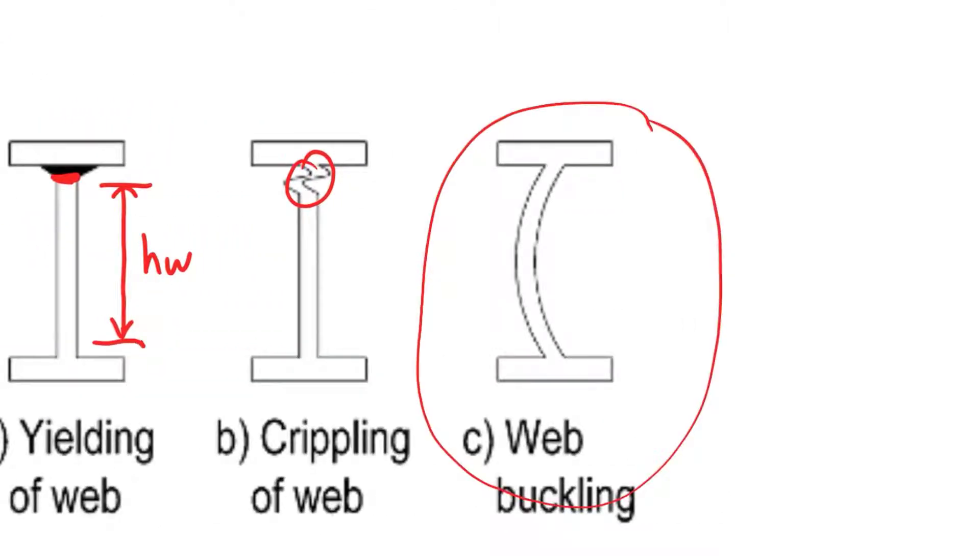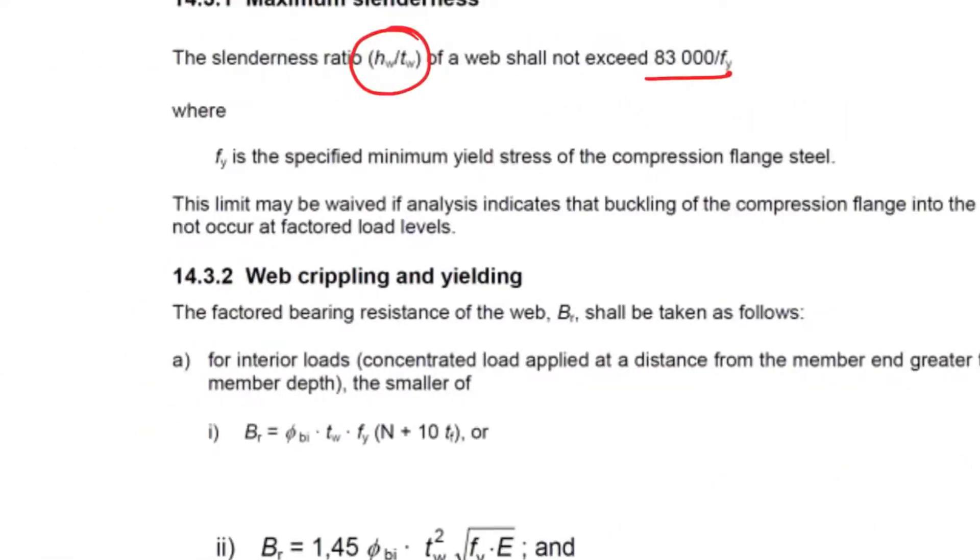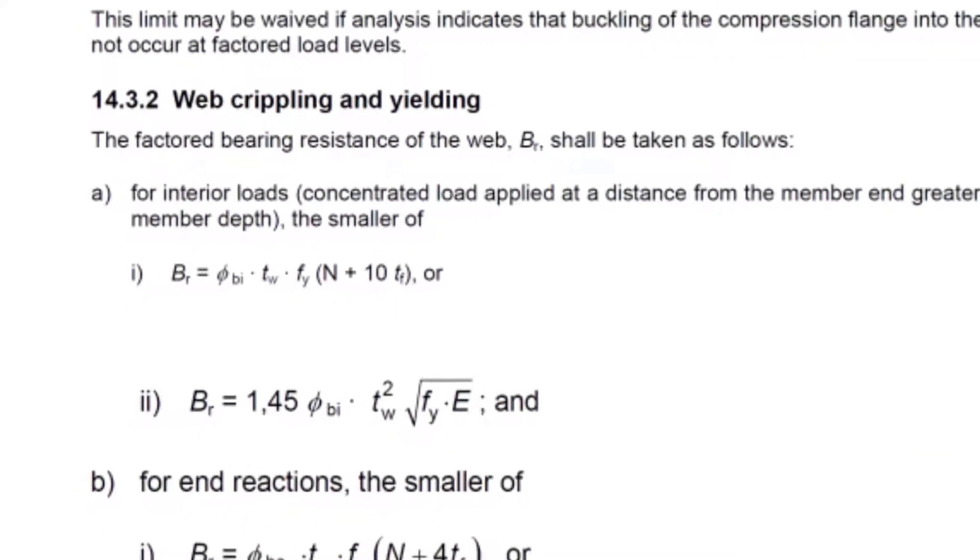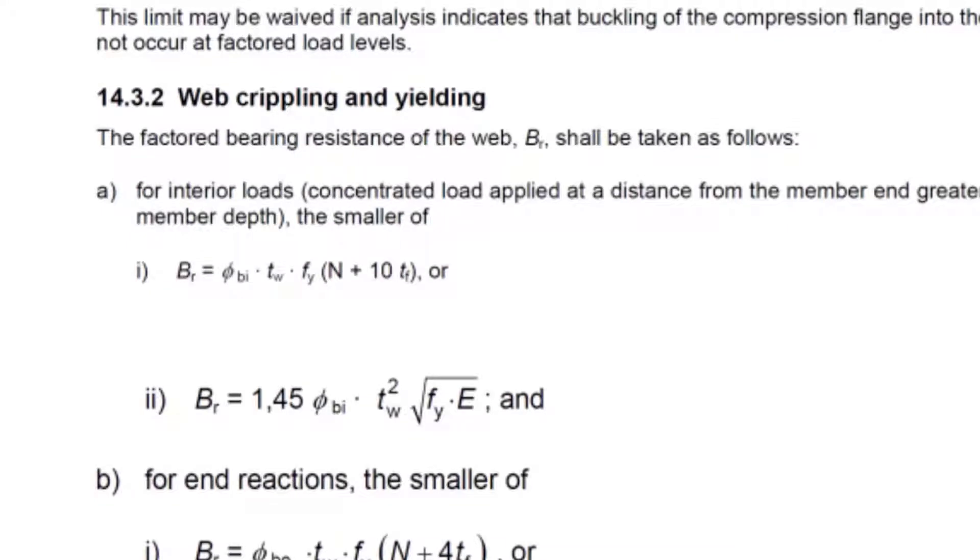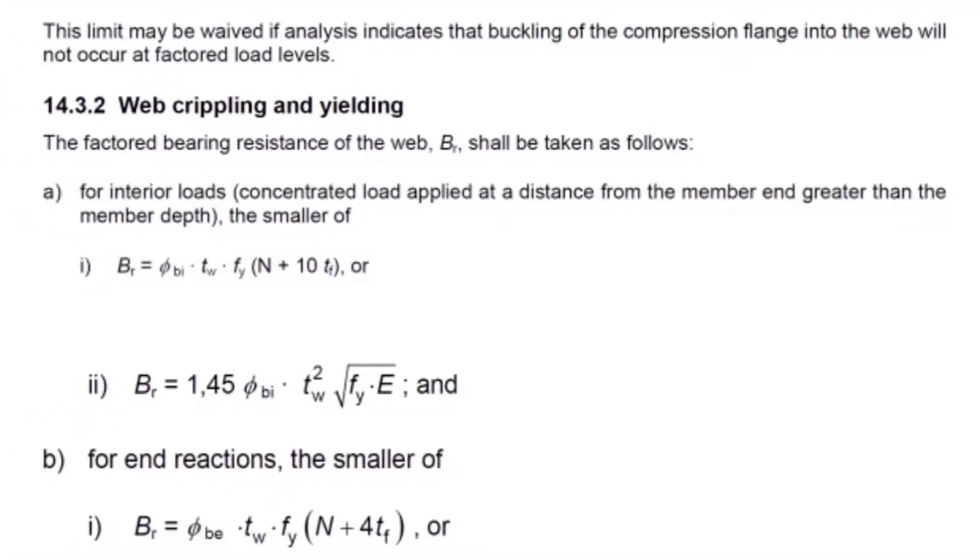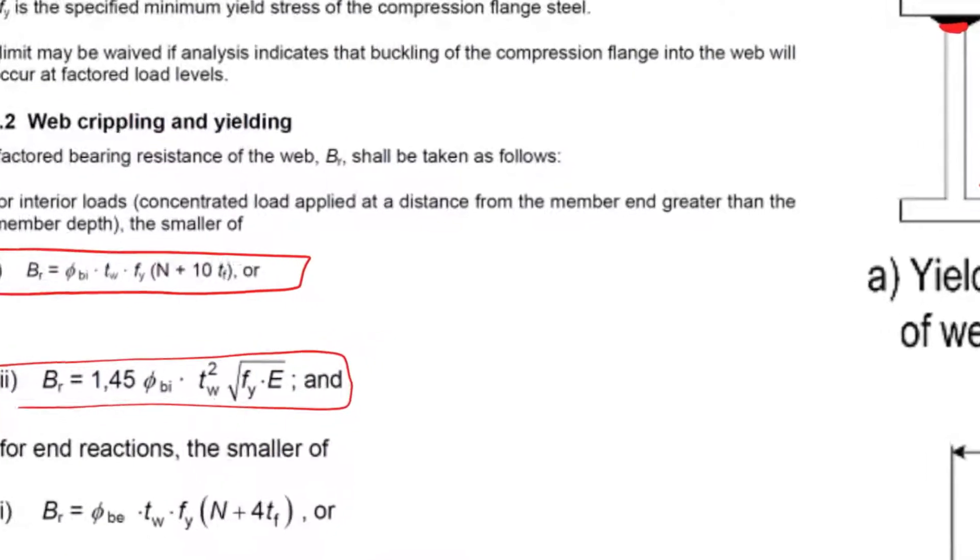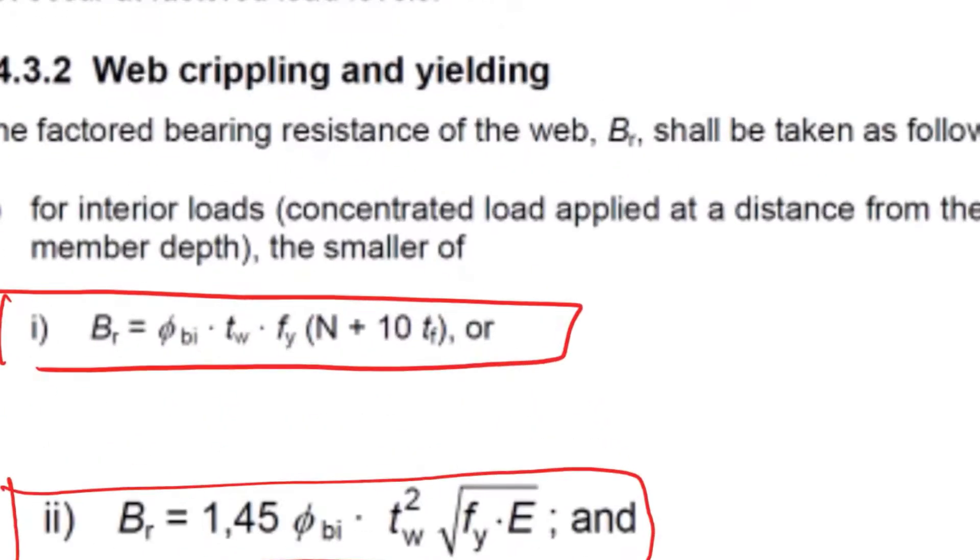That prevents overall web buckling. The rest of the calculations are for the other two failures. The factored resistance of the web Br shall be taken as follows: for interior loads, concentrated load applied at a distance from the member end greater than the member depth, shall be the smaller of bearing resistance or crippling resistance.